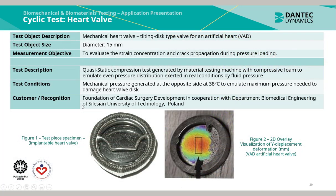The last application from the cardiac surgery elements is a cyclic test performed on a mechanical heart valve. This is a tilting disc type valve that can be found in an artificial heart or VAD. The test object size is 15 mm in diameter and the objective is to evaluate the strain concentration and crack propagation inside the valve during pressure loading.